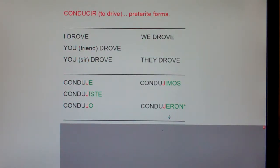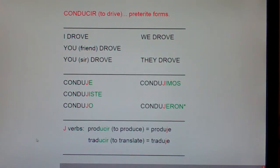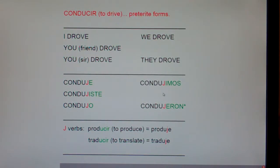Now, some of you are thinking this is a hard verb — that's a lot of trouble for just one verb — but be careful. There are actually several verbs that follow this pattern. Everybody say J-verbs. J-verbs are verbs like conducir, producir, and traducir. The infinitive ends in U-C-I-R. If it's a J-verb, in the present tense the yo form has a Z: produzco, traduzco, conduzco. And if it's a J-verb, in the preterite there's a J in all five forms. Again, this is a tricky verb — you might want to watch it a second time. Hopefully you're now feeling more comfortable with conducir, to drive, with preterite forms.